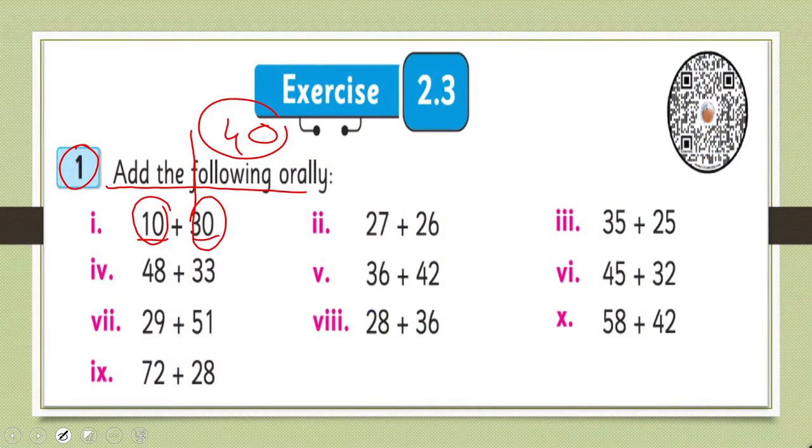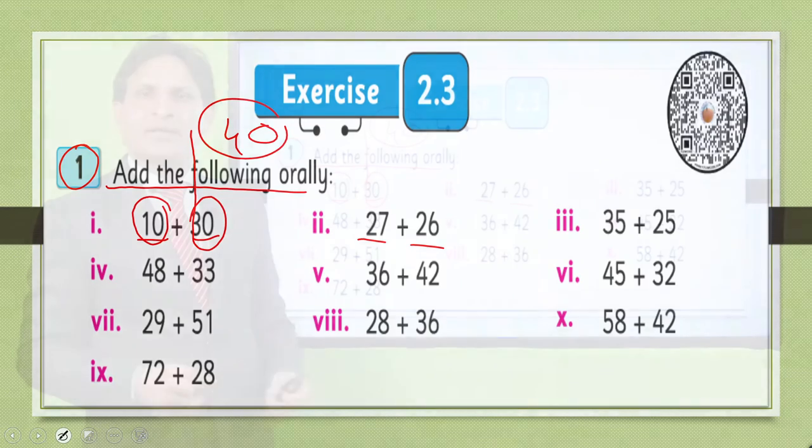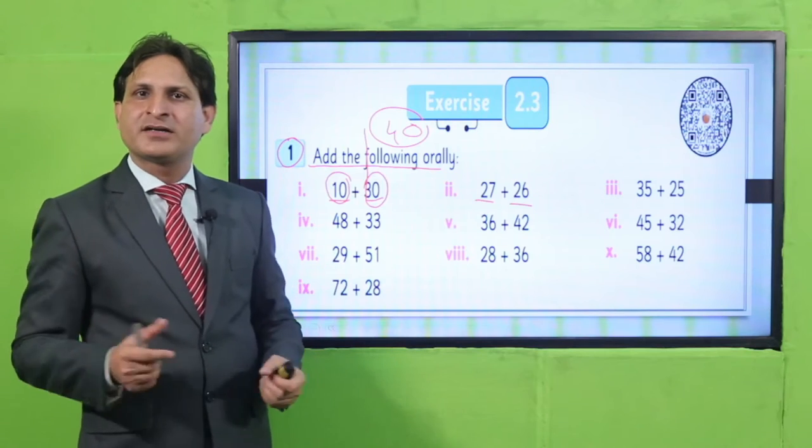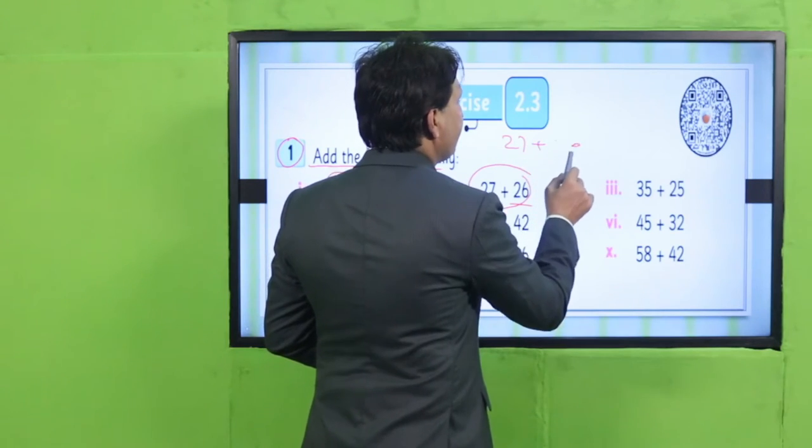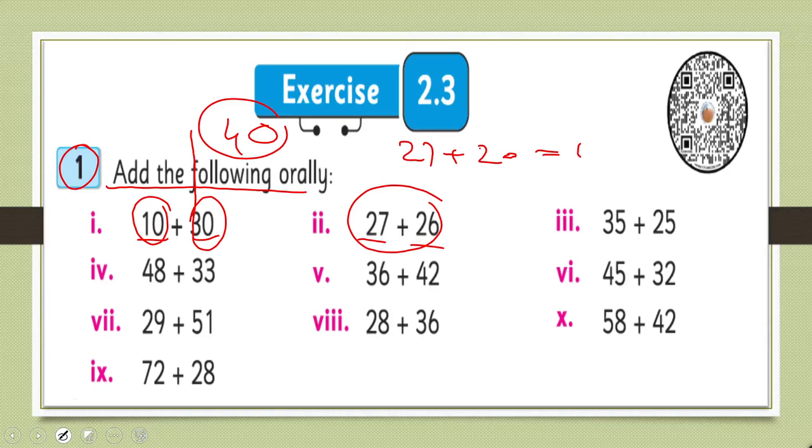In the same way, solve the next question: 27 and 26. After solving these questions, tally your results with the solution manual given in the description box. How do you quickly add 27 and 27? Do 20 plus 20 - add 20 to 27 and you get 47. Add 6 to 47 and you get 53. So you have 47, then add 6, and your result is 53.